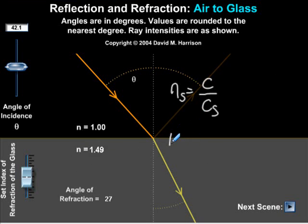So therefore, 1.49 is equal to 3 times 10 to the 8 meters per second divided by the speed in the substance.